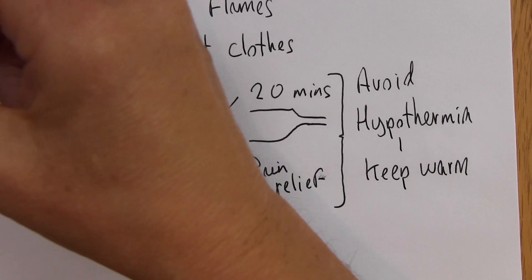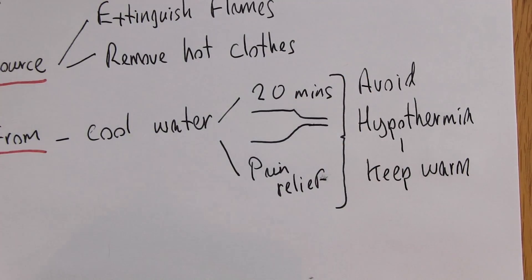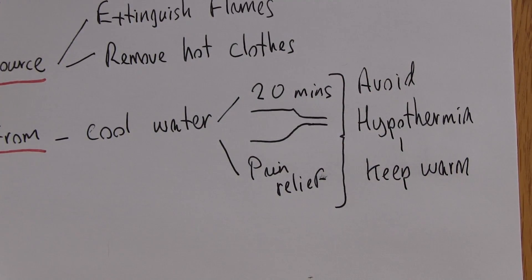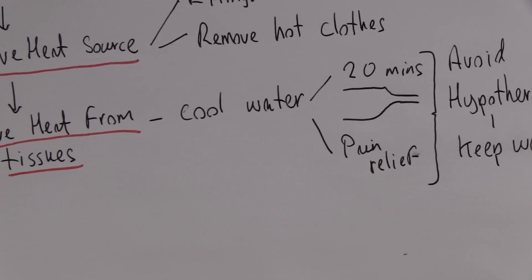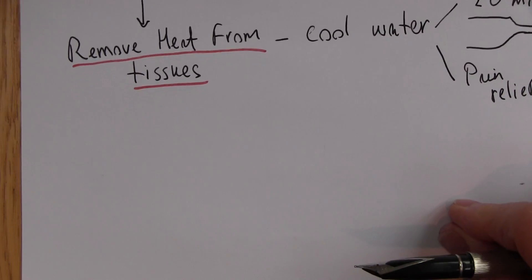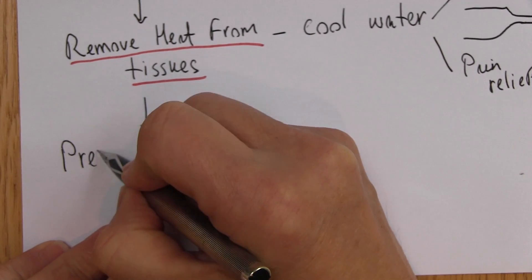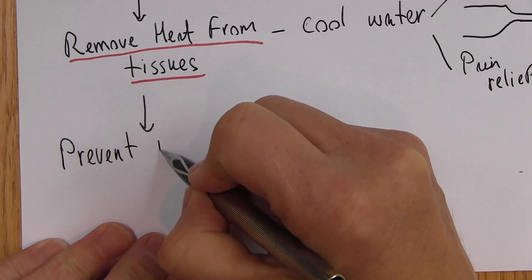So we've removed the heat source, we've removed the heat from the tissues. Now the next complication with burns, and it's a huge complication, a life-threatening complication with burns, is infection. So the next thing to do is prevent infection.